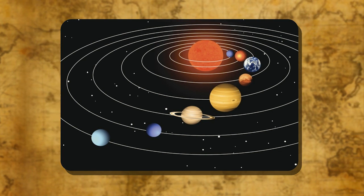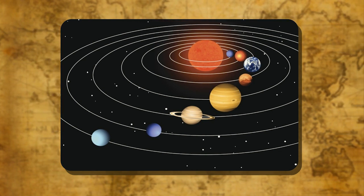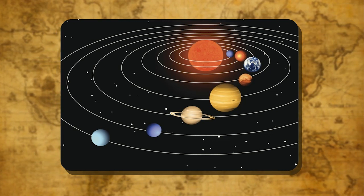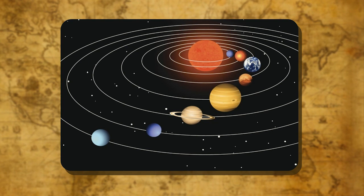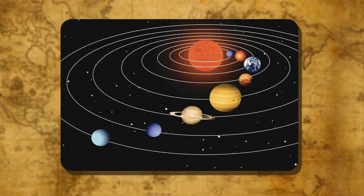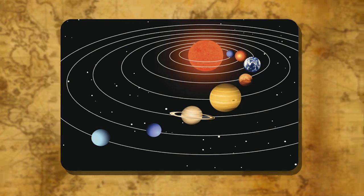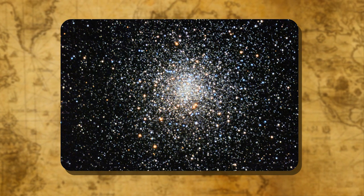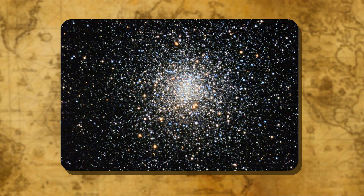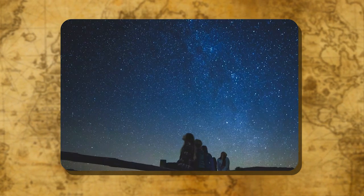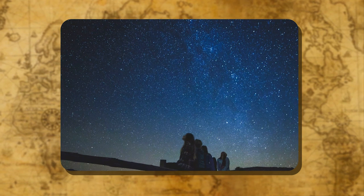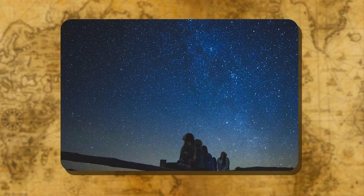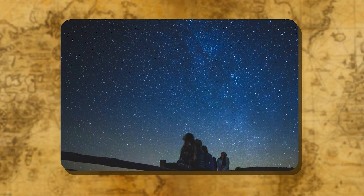Earth's place in the universe: The Earth is one of the planets that revolve around the sun in an elliptical path. Millions of stars together form a group called a galaxy, and there are millions of galaxies in the whole universe. Earth belongs to the Milky Way galaxy. Distances in the universe are measured in light years — the distance that light travels in one year. The light of the nearest star, Proxima Centauri, reaches Earth in about four years.